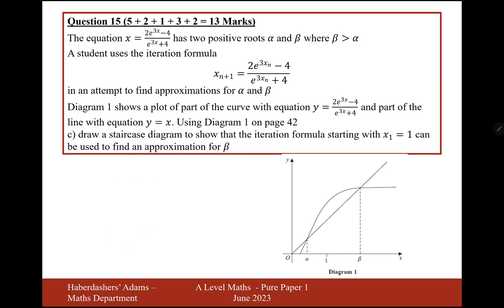Let's now move on to part C. The equation x equals 2e to the 3x minus 4 over e to the 3x plus 4 has two positive roots, alpha and beta, where beta is bigger than alpha. A student uses the iteration formula in an attempt to find approximations. Using diagram 1, draw a staircase diagram to show the iteration formula when x equals 1 can be used to find an approximation for beta. What happens is you substitute x equals 1 into the formula, go up to the curve, then across to y equals x — up, across, up, across. It's a classic staircase diagram.